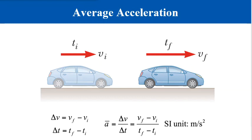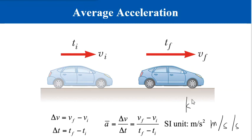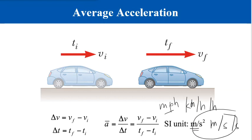In the figure of a car moving along a straight highway, at a certain time it has an initial velocity, and at a final time it has a final velocity. The average acceleration during the time interval is the change in velocity (delta v) divided by the change in time (delta t). The unit for acceleration is meters per second per second, or m/s². Other units include kilometers per hour per hour or miles per hour per hour, but we use metric units.